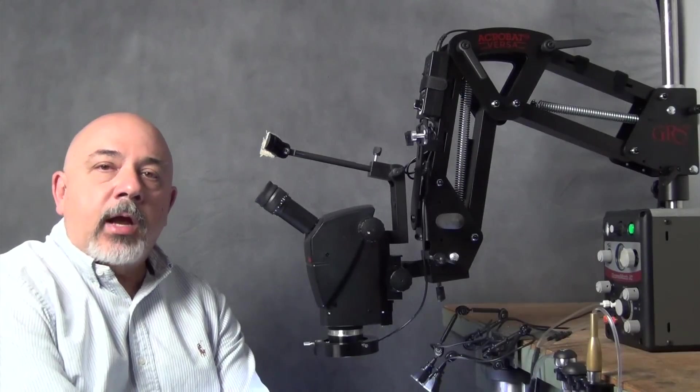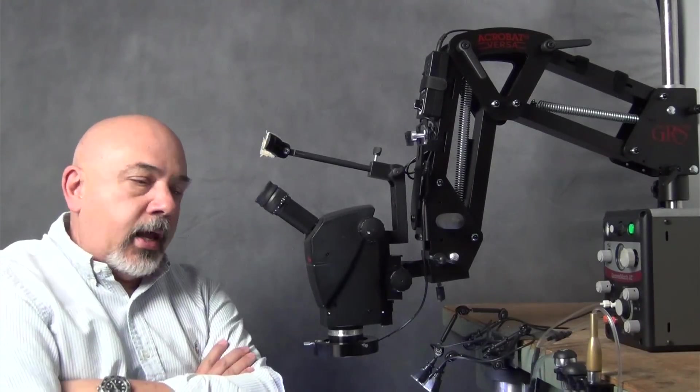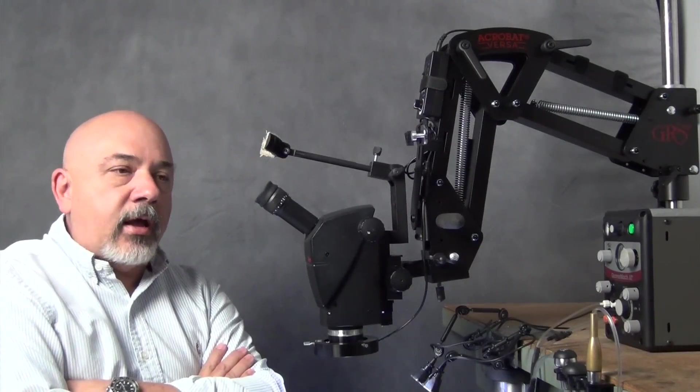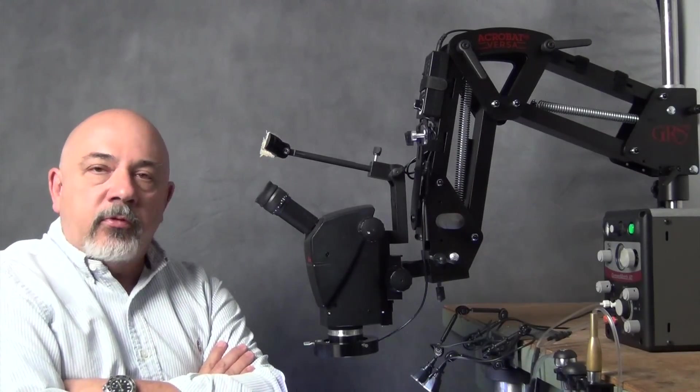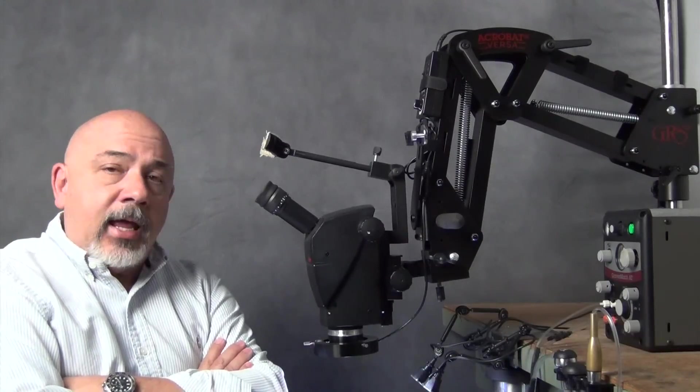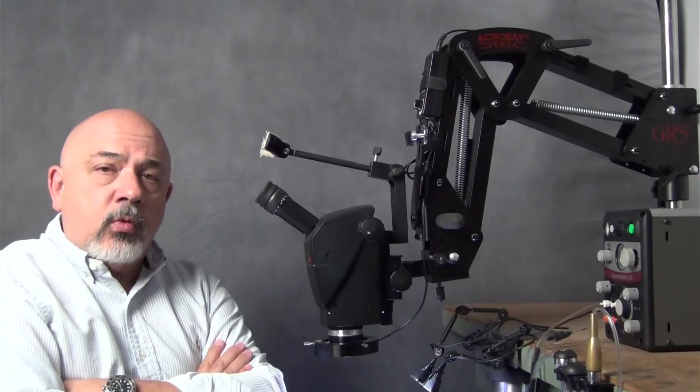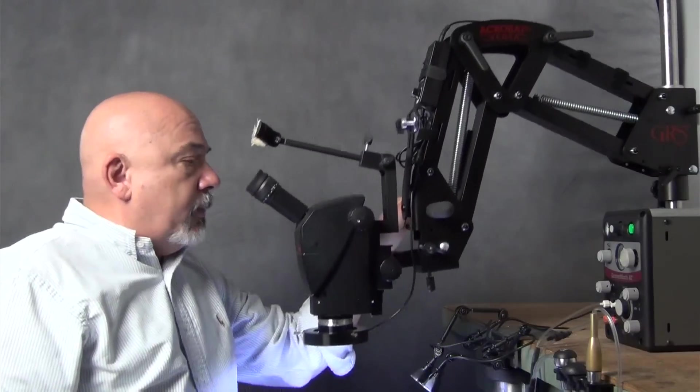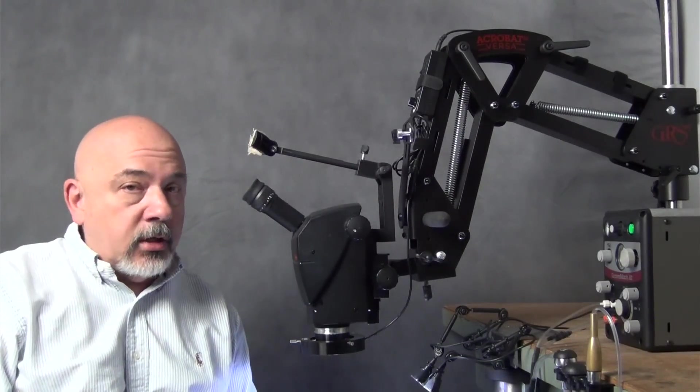The Acrobat Versa microscope stand, in addition to looking great, it's a rock solid microscope stand. If you've ever used a microscope at high magnification and experienced any kind of vibration or shake, you know how annoying that can be, it can really keep you from being able to do your best work. The Acrobat Versa stand is rock solid and easy to maneuver as well, so it's the best of both worlds. You can push it around, move it out of the way, reposition it very effortlessly, and you will not experience any vibration in the process.